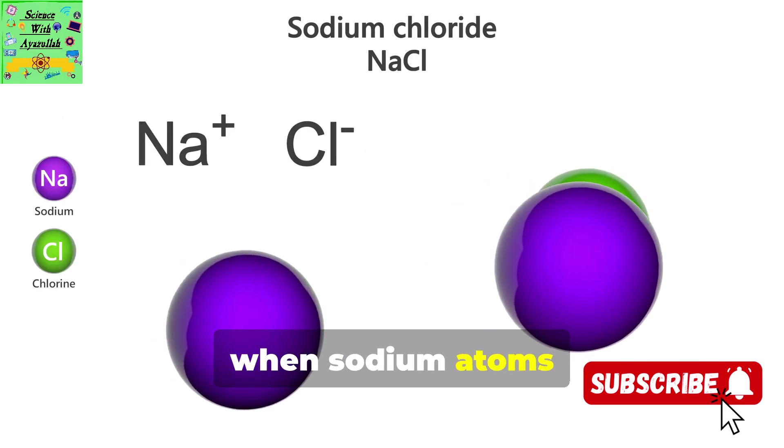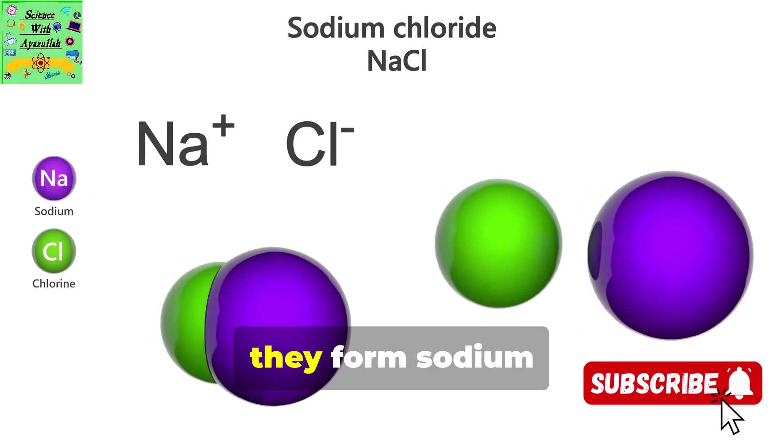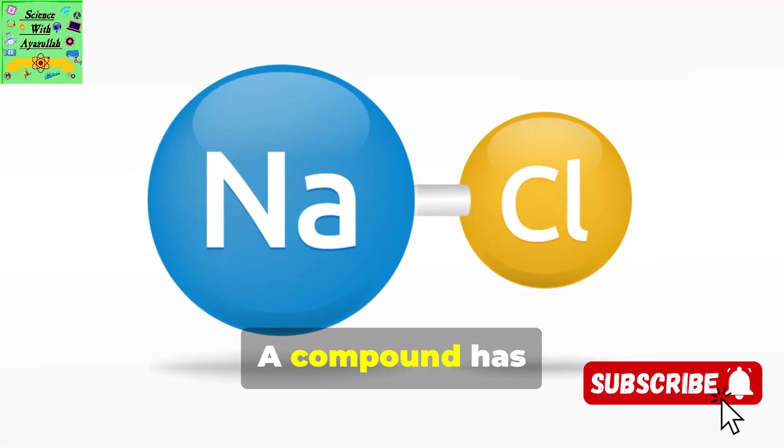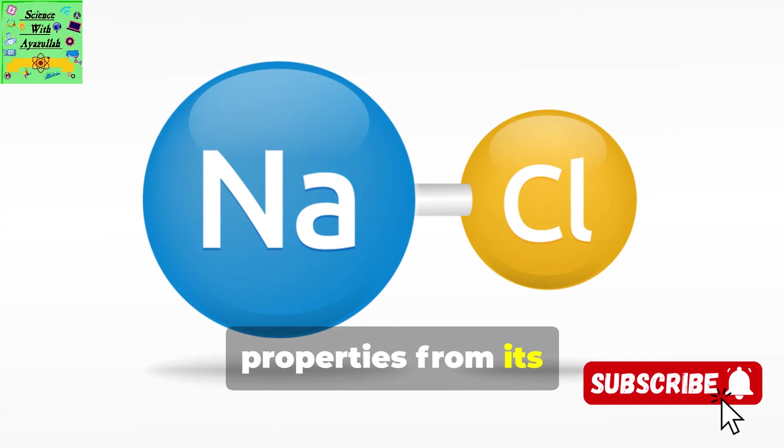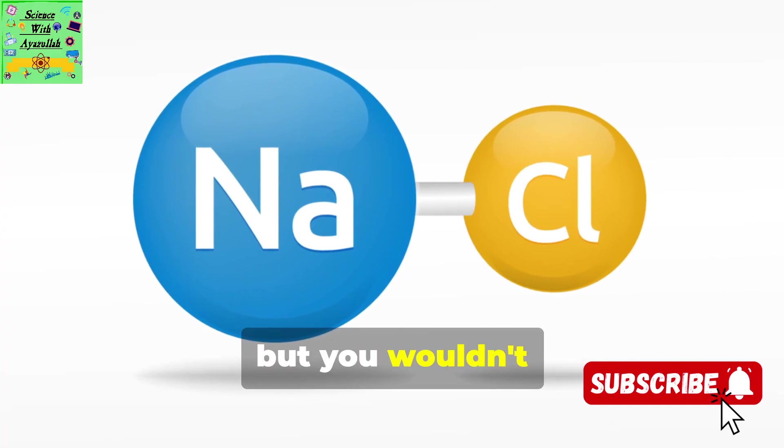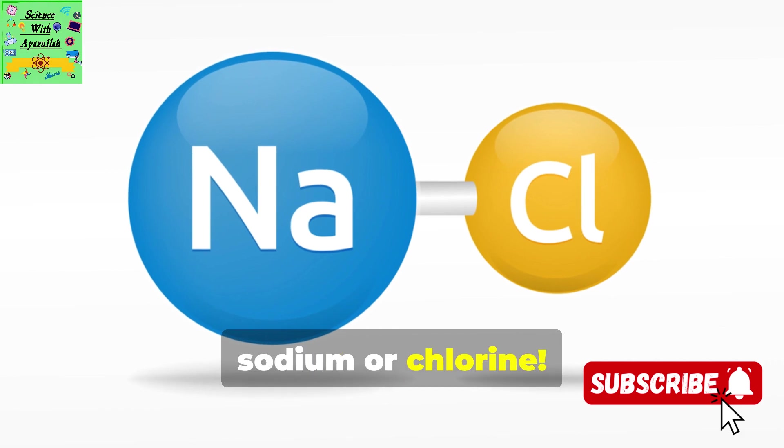For example, when sodium atoms bond with chlorine atoms, they form sodium chloride, common table salt. A compound has completely different properties from its original elements. You may have eaten sodium chloride today, but you wouldn't want to eat pure sodium or chlorine.